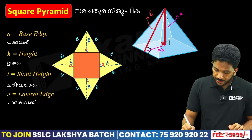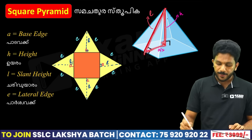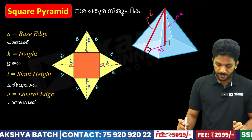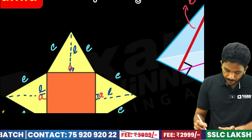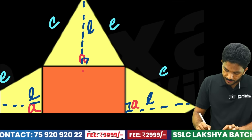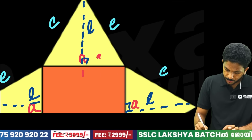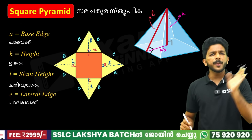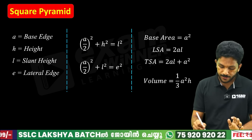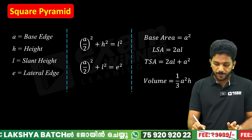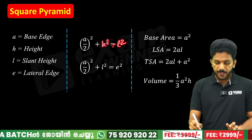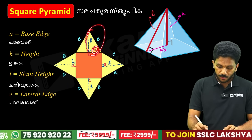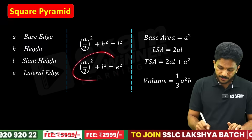Now you have a right-angle triangle with sides H, A/2, and L. This gives the first relation: (A/2)² + H² = L². There is also a second triangle giving: (A/2)² + L² = E².